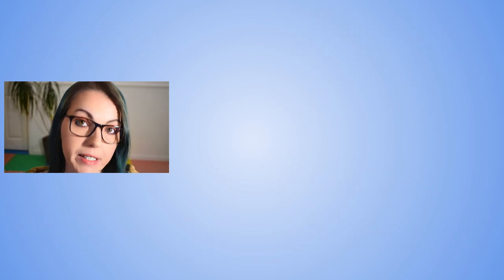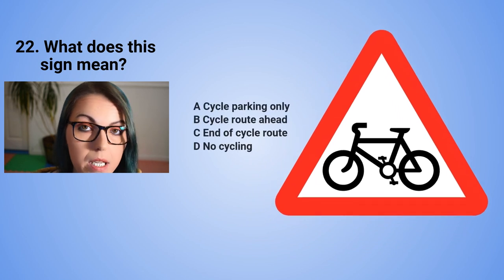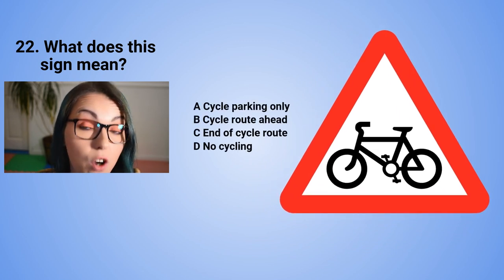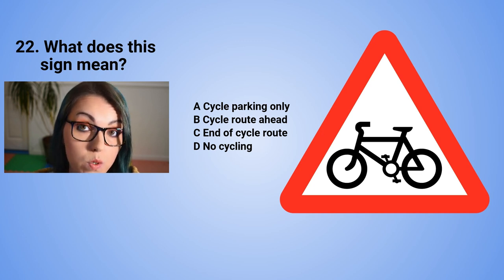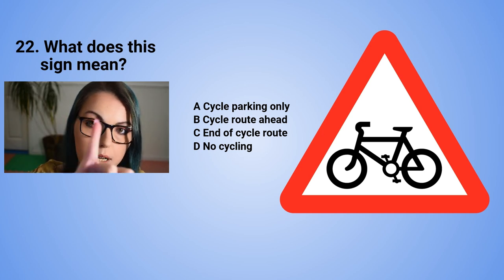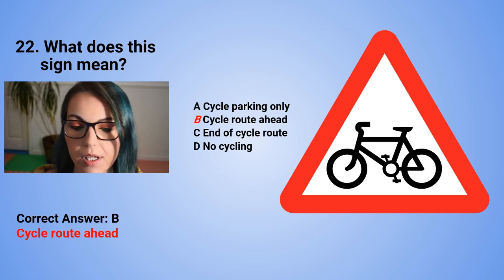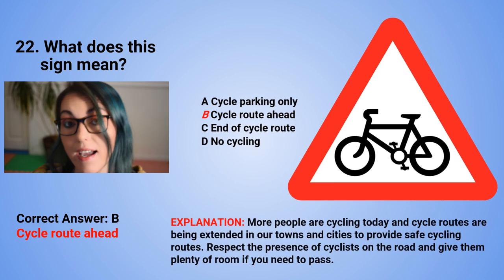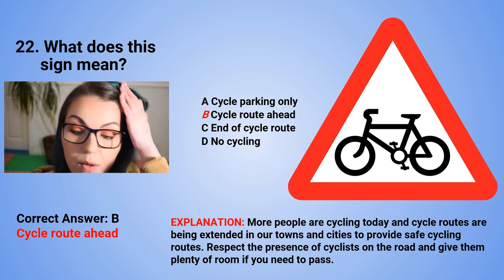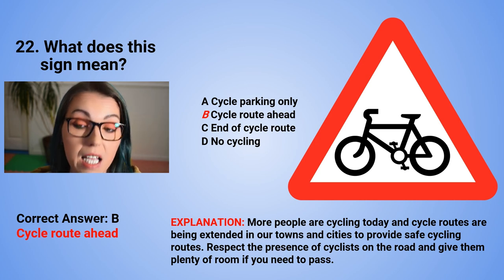Question 22: What does this sign mean? A. Cycle parking only. B. Cycle route ahead. C. End of cycle route. Or D. No cycling. The correct answer is B — cycle route ahead. More people are cycling today and cycle routes are being extended in towns and cities to provide safe cycling routes. Respect the presence of cyclists on the road and give them plenty of room if you need to pass.